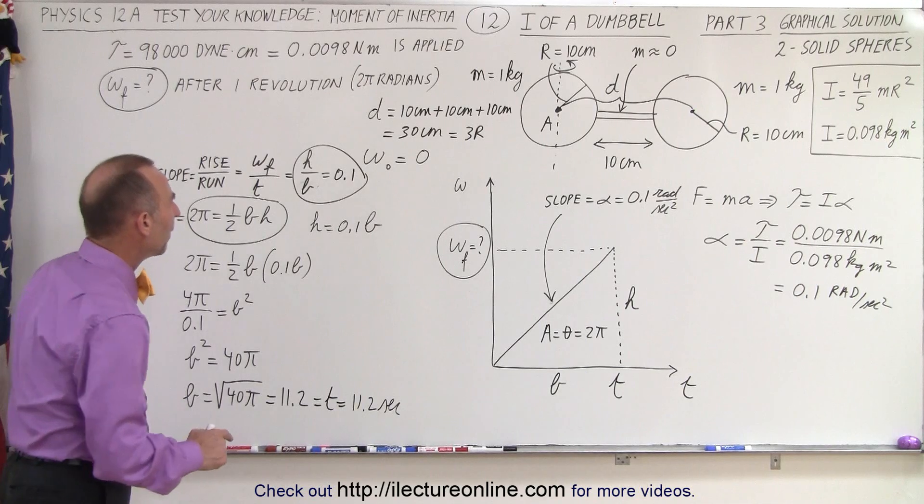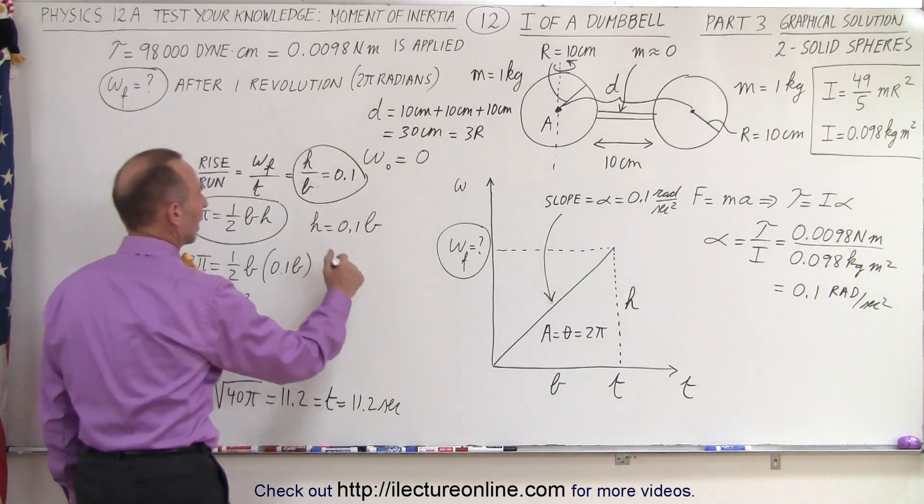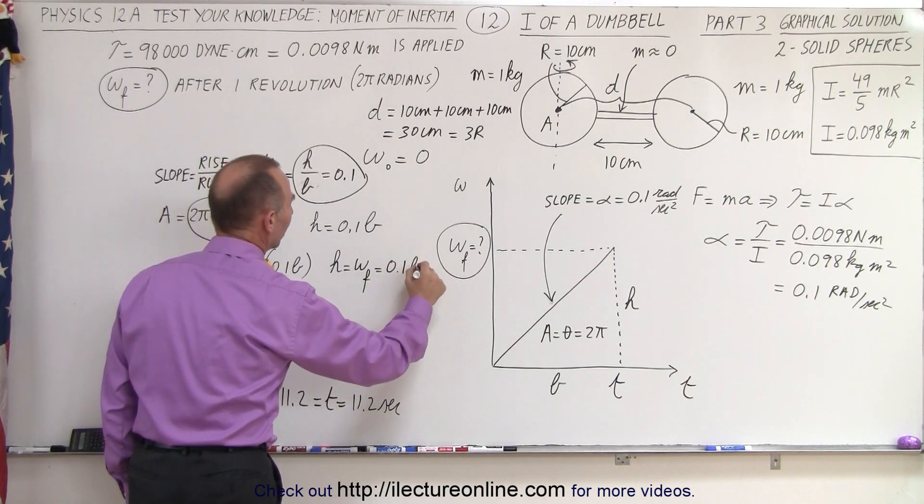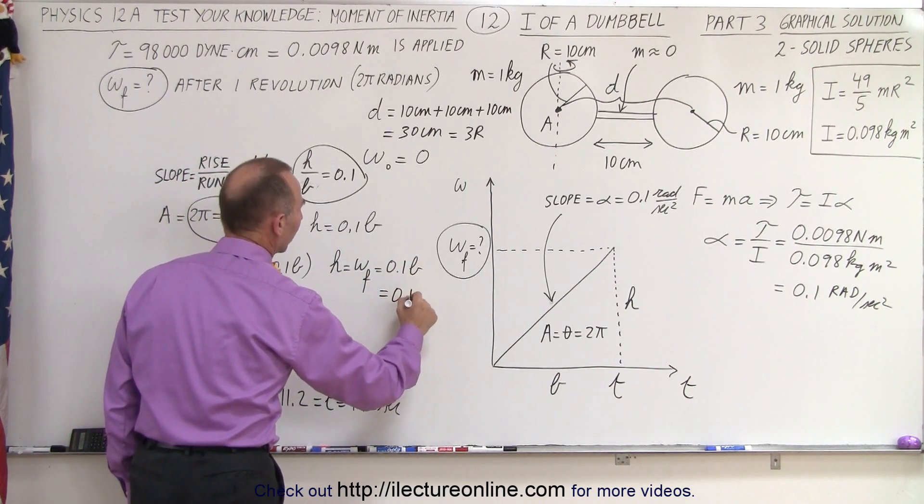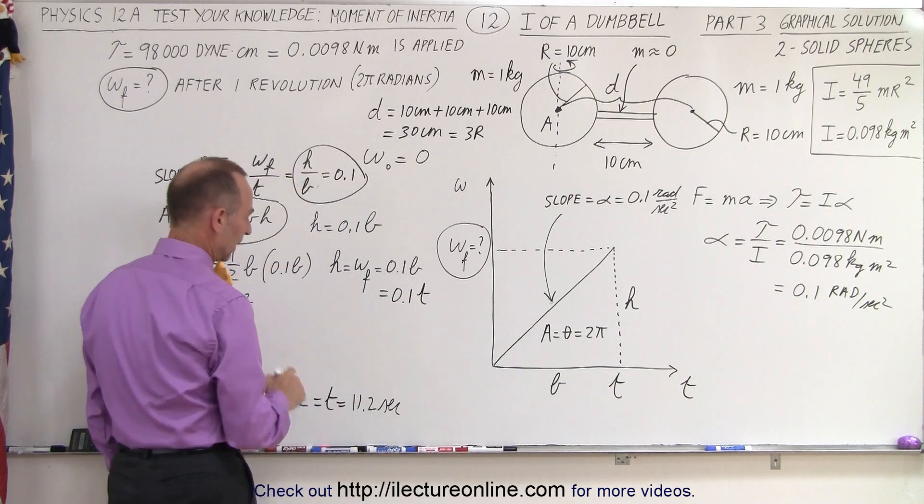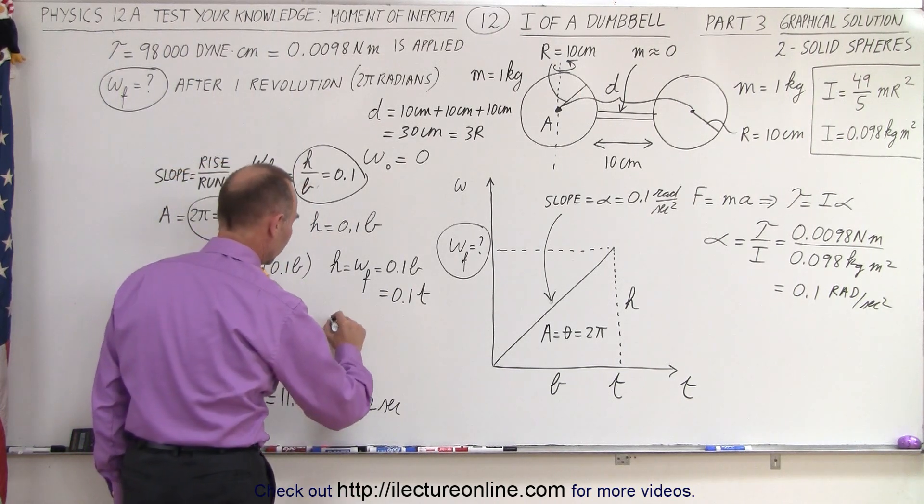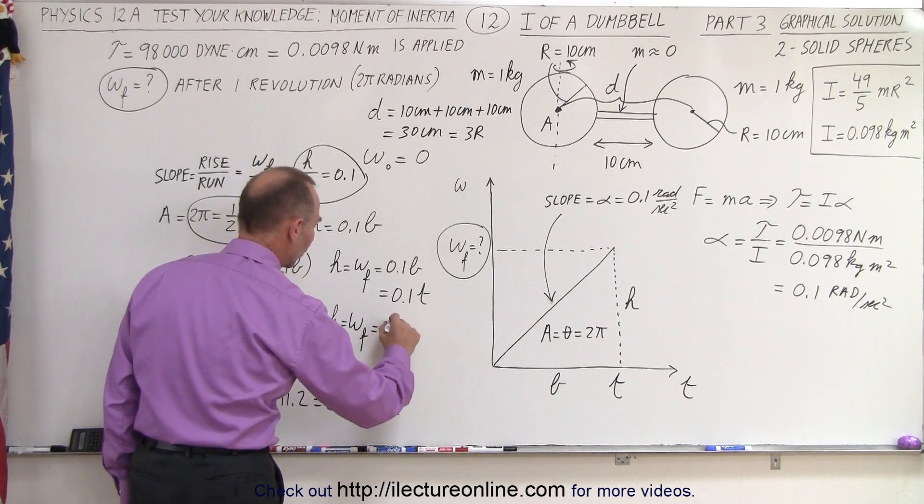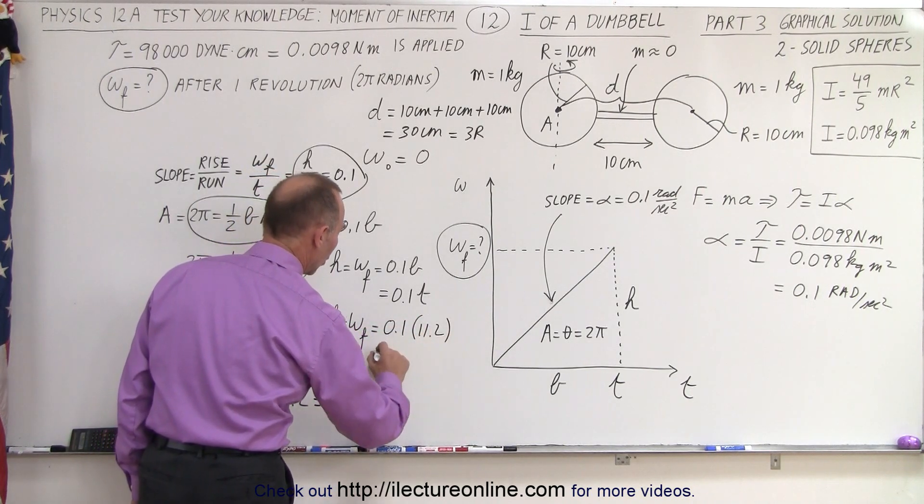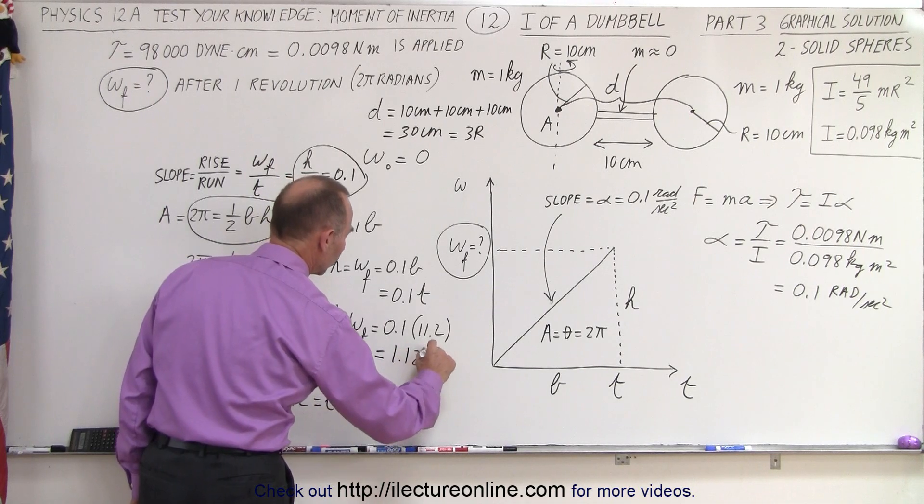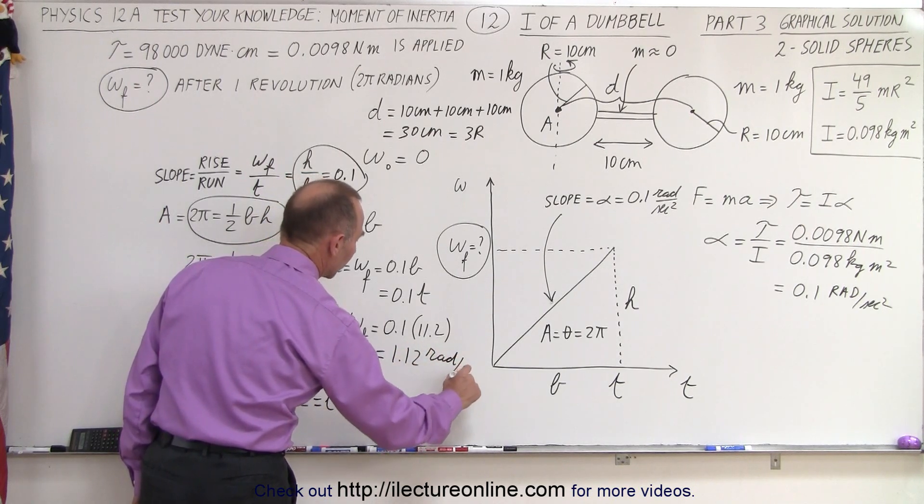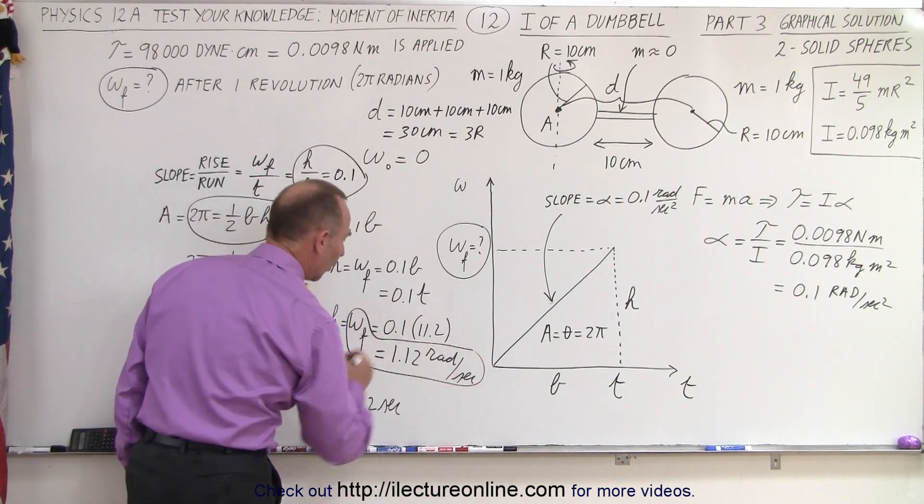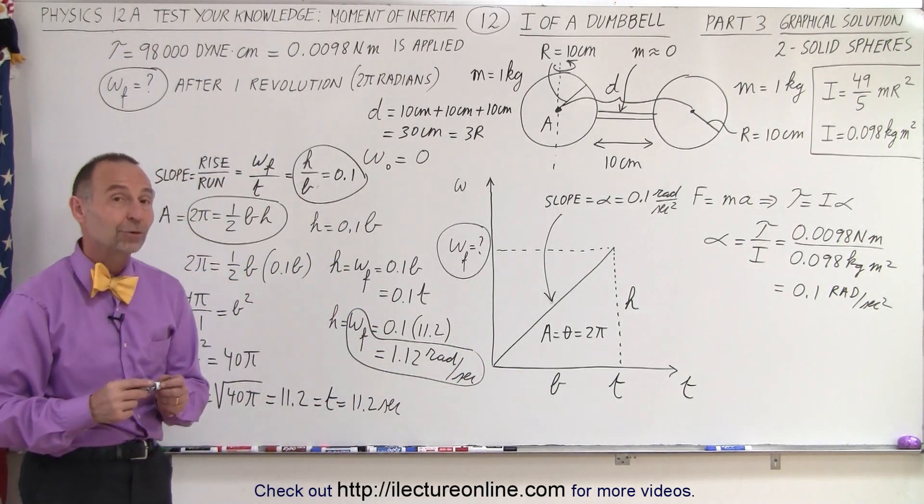All right. Now, I can go back to the height. Remember, the height, which is equal to omega final, is equal to 0.1 times the base, or 0.1 times the time. And, since the time is 11.2, then the height, which is the omega final, is equal to 0.1 times 11.2, or 1.12, and that would be radians per second for the final omega.